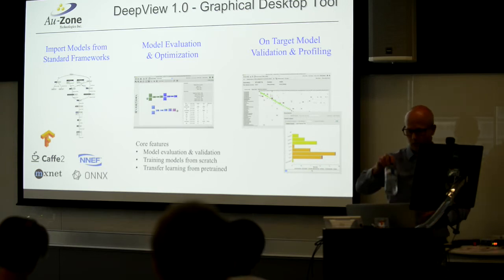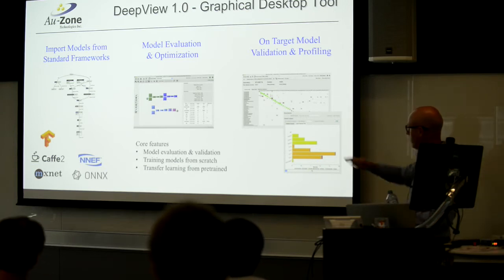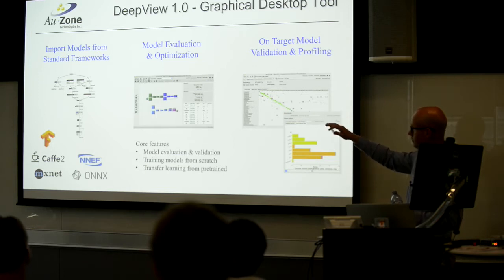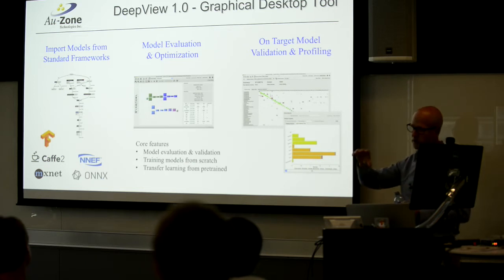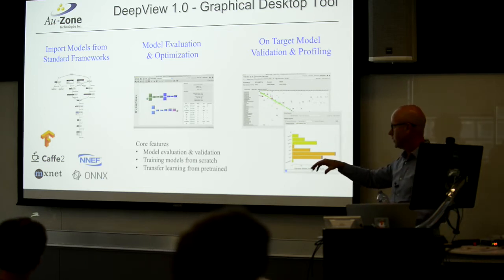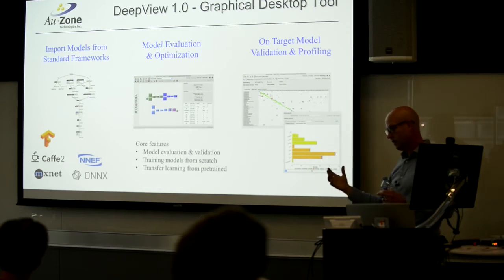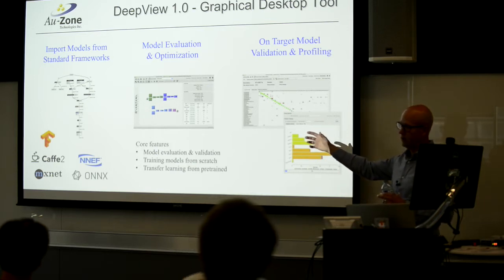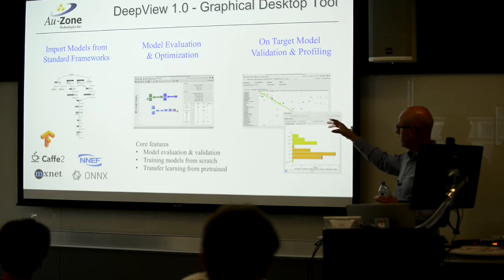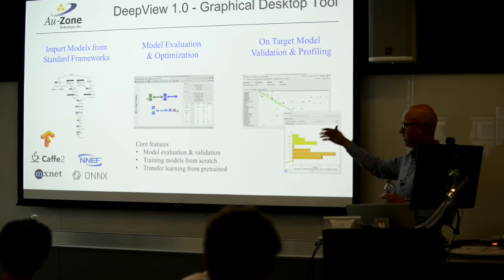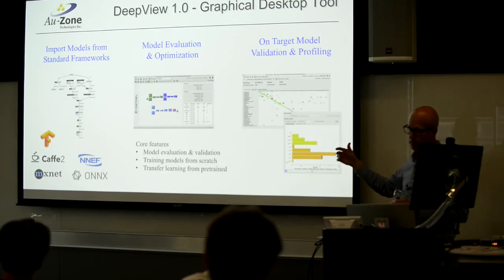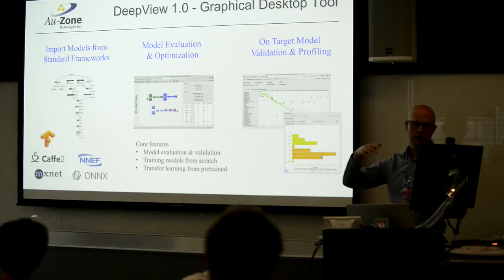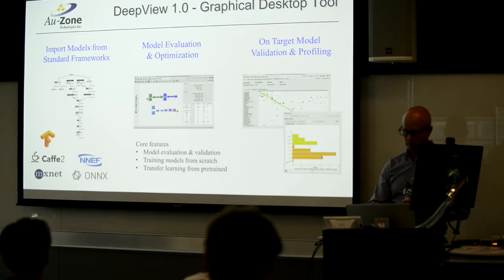The DeepView tool itself — these are some screenshots. It allows you to do your work in three different spaces: TensorFlow, CAFE, or the DeepView framework, and then deploy to target. Through the framework, you can evaluate your model on the desktop and on the target, and you can also modify and adjust it so you can iterate on that design to optimize it for the problem you're trying to solve.